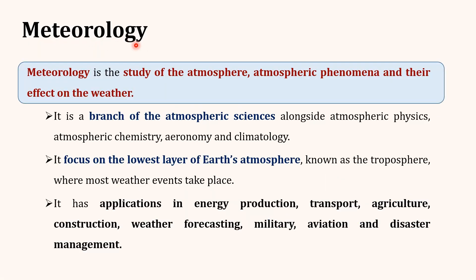Meteorology is defined as the study of the atmosphere, atmospheric phenomena and their effect on the weather — including atmospheric physics, atmospheric chemistry, aeronomy and climatology. Meteorology is also a branch of the atmospheric sciences. It mainly focuses on the lowest layer of the earth's atmosphere, that is the troposphere, which is the layer where most weather events take place.